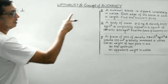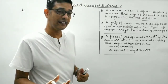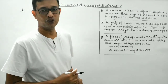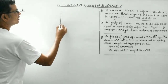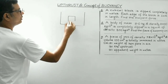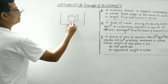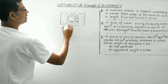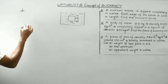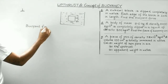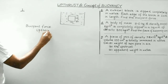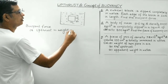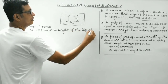First question: a cubical block is completely dipped inside water. Each edge of the block is 1 centimeter in length. We are supposed to find out the buoyant force. Buoyant force, also known as up thrust, is given by the weight of the liquid displaced by the submerged portion of the body.